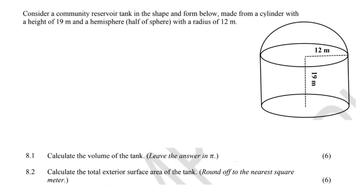This question says: consider a community reservoir tank in the shape and form below, made from a cylinder with a height of 19 and a hemisphere with a radius of 12.